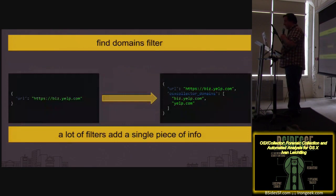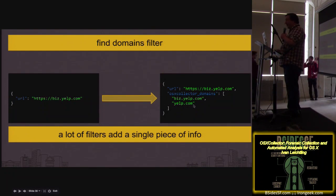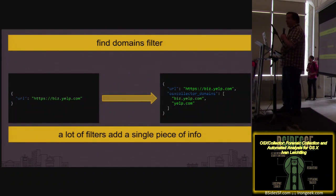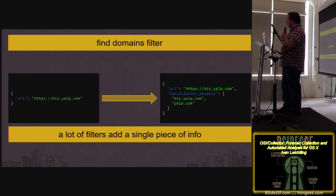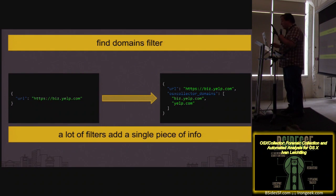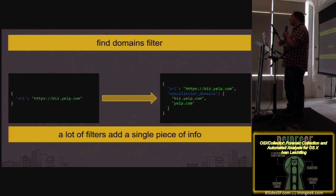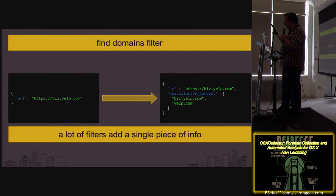The find-domains filter is the first one. If it sees a domain, it adds it to the output key 'osxcollector_domains.' It doesn't matter where the domain appears — whether it's in the key of some JSON, in the value, in a URL with a query parameter that's itself another URL. It does a pretty good job of finding all of it. Whenever we see subdomains, we add those and also stem them down to the base domain. For example, biz.yelp.com is also yelp.com — that can be helpful.